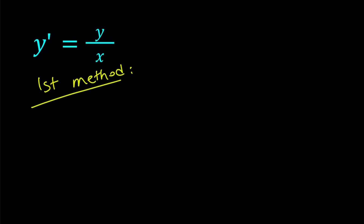For my first method, I'm going to use substitution, which is basically typical for these kinds of equations. We've done similar equations before, where you can write y prime as a function of x over y or y over x. In this case, it is a function of y over x. If you can do this, my first method can always be applied — it is basically changing the variable.